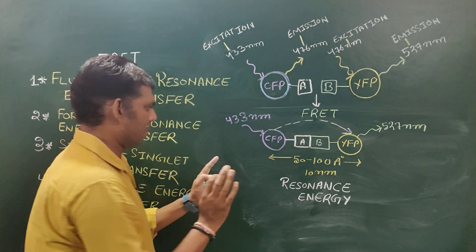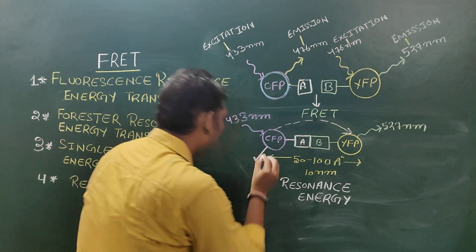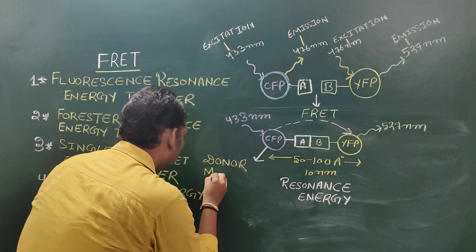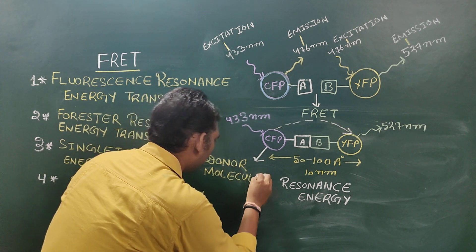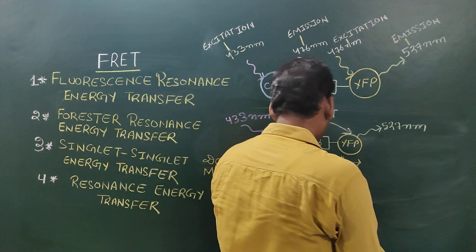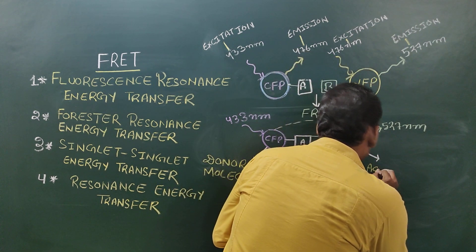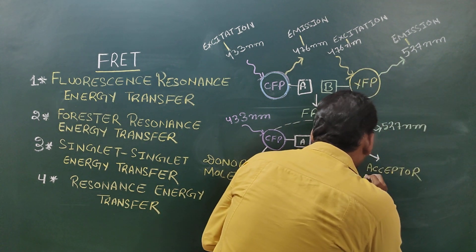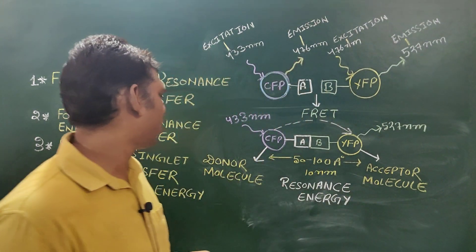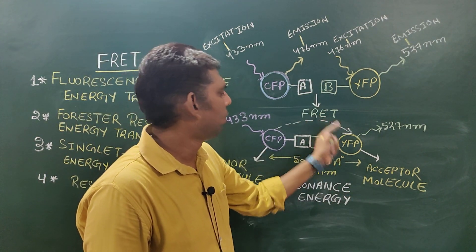The fluorescent molecule which transfers its energy is known as the donor molecule, and the molecule which absorbs the energy emitted by the donor molecule is known as the acceptor molecule. So, the emitting wavelength of the donor molecule must match the absorbing wavelength of the acceptor molecule.